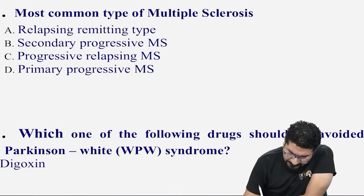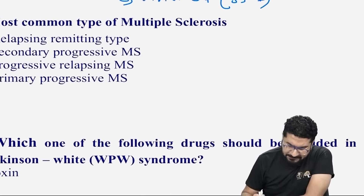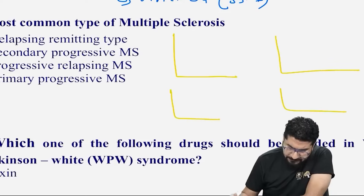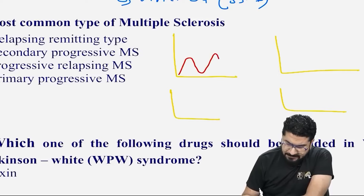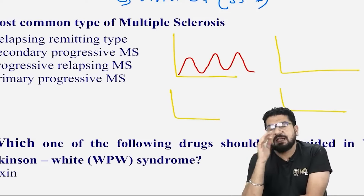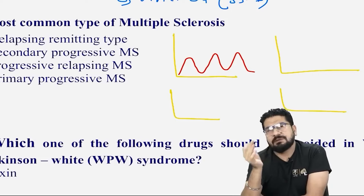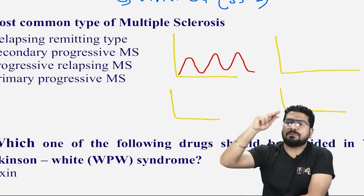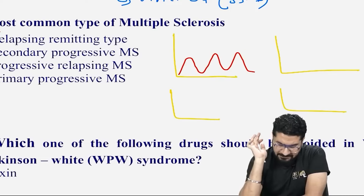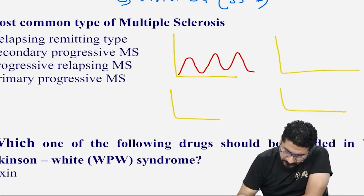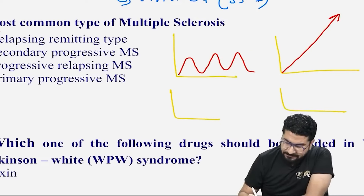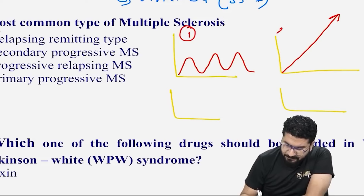Next: the most common type of MS. There are different varieties. In relapsing-remitting type, the patient has flares of symptoms then returns to normal — symptoms present, then minimal. In primary progressive type, symptoms keep on increasing without remission. Multiple sclerosis is the most common demyelinating CNS disease.